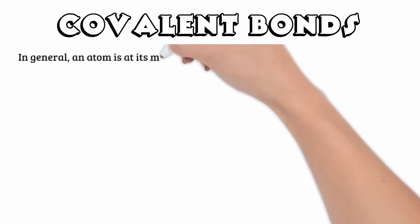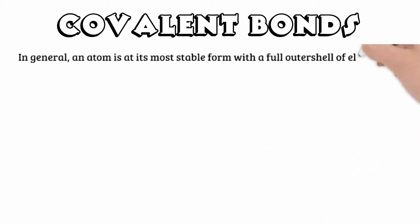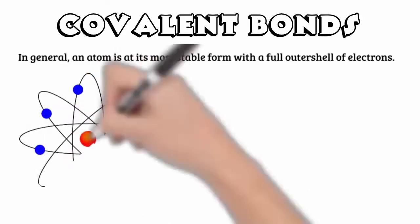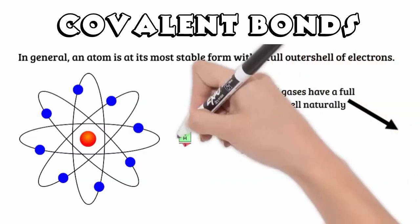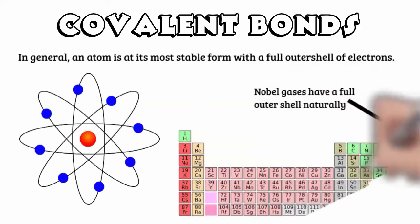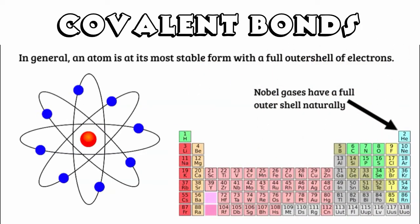Now remember that the aim of all atoms is to become stable. Stability for an atom comes from obtaining a complete outer shell of electrons. The only atoms of elements that have a full outer shell naturally are in column 8 of our periodic table and these are our noble gases. All other atoms need to bond chemically with other atoms in order to obtain this type of stability.